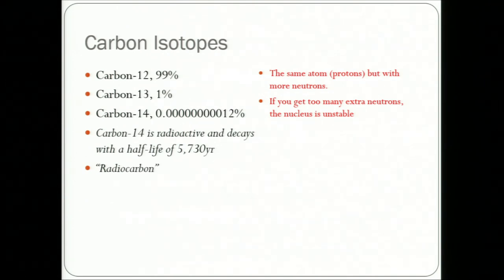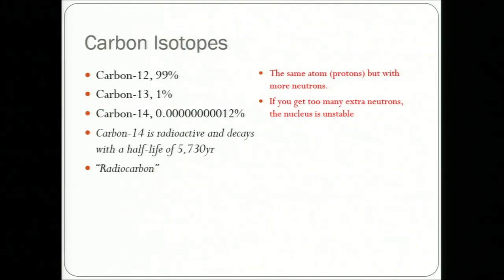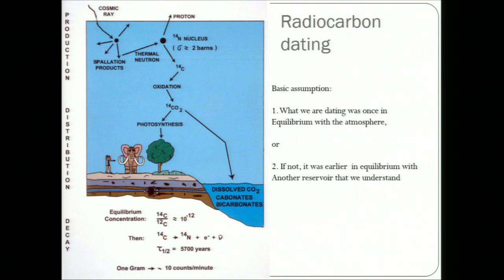For the non-specialists in the audience: carbon-14 is about one part in 10 to the 12 of modern carbon, and it has a half-life of 5,700 years, more or less. It decays by beta decay to nitrogen-14. It's actually produced from nitrogen-14 and decays to nitrogen-14, which is kind of strange. We also refer to this as radiocarbon frequently.